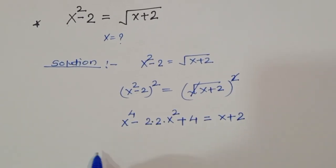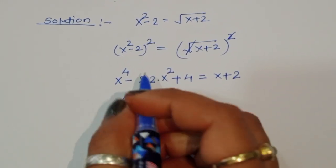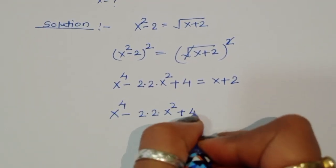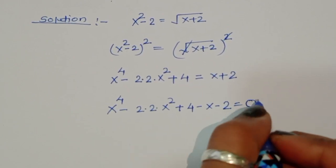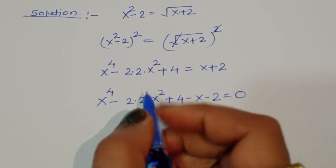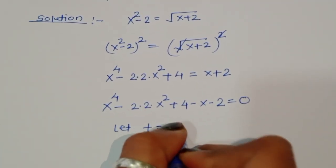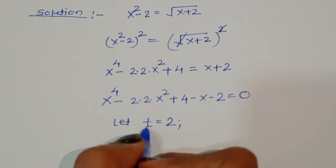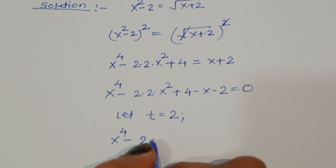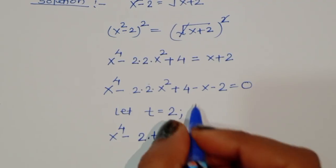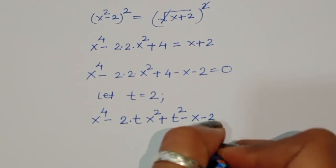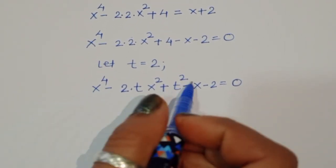So we have x power 4 minus 4x squared plus 4 minus x minus 2 equal to 0. Now we let t equal to 2. Substituting, the equation becomes x power 4 minus 2t x squared plus t squared minus x minus 2 equal to 0.